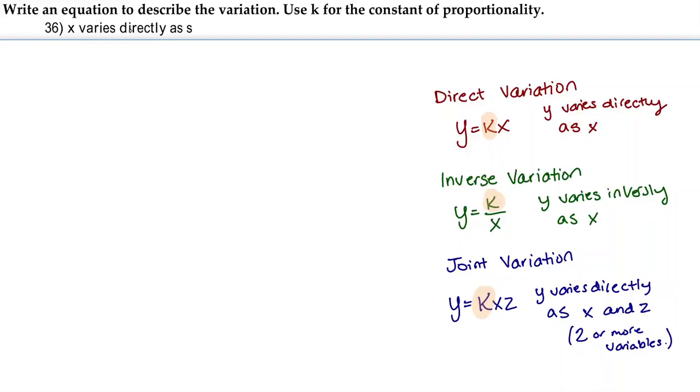we have x varies directly as s, and directly is going to be the key word telling us that we're using this formula. So y equals kx. Now notice how this is written. y varies directly as x. So our y is first, and it's going to equal k times something. That something is going to be as x.